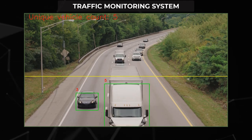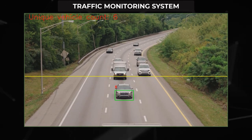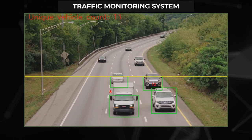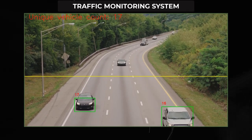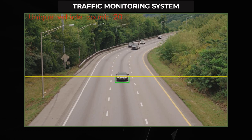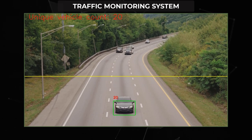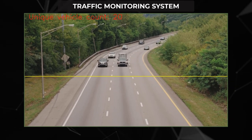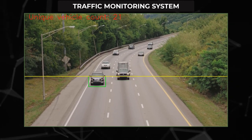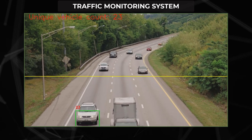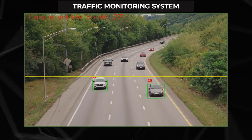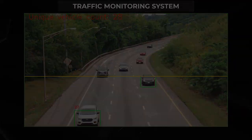Let's take another example. A traffic monitoring camera counts the number of cars on the road. Here, the input is a video frame and the output is information — the count of the number of cars. Therefore, this too is computer vision.